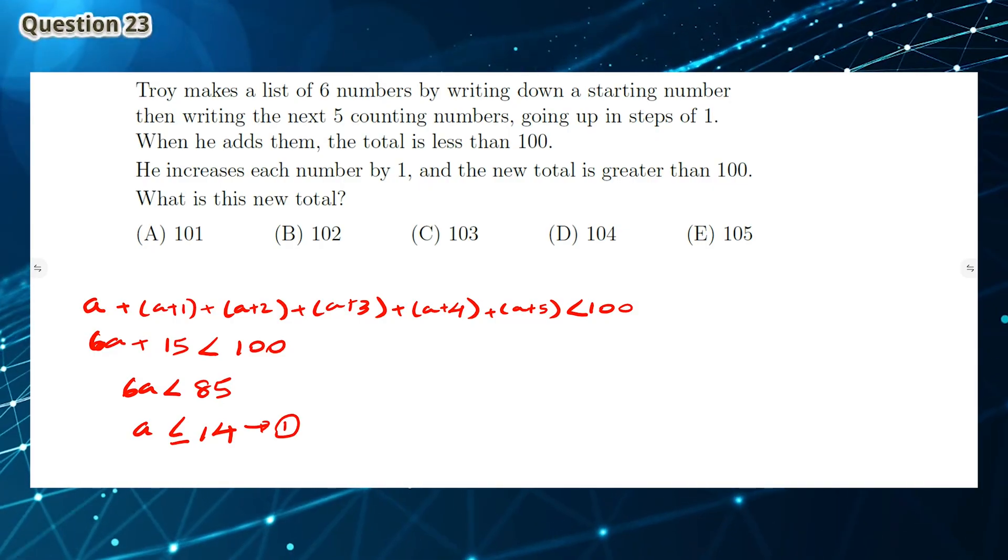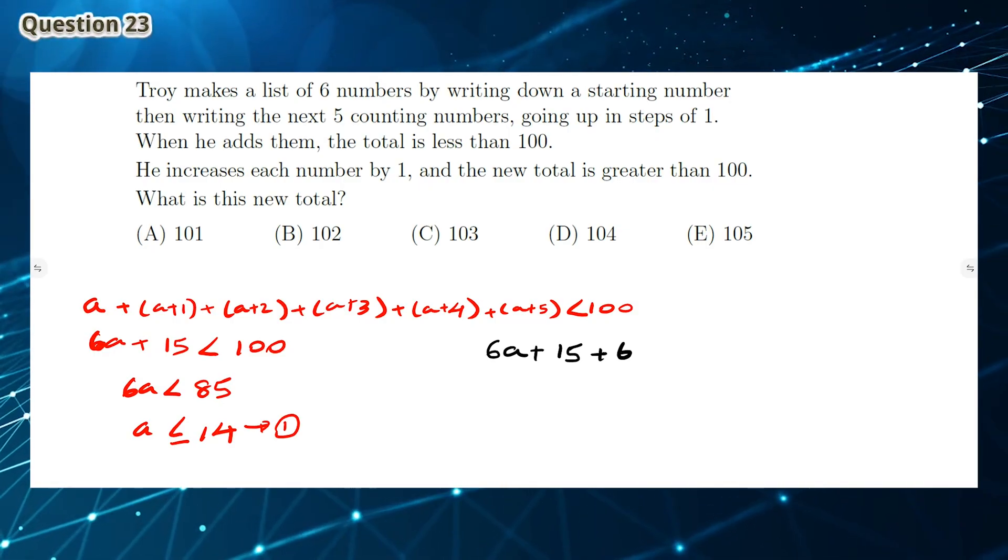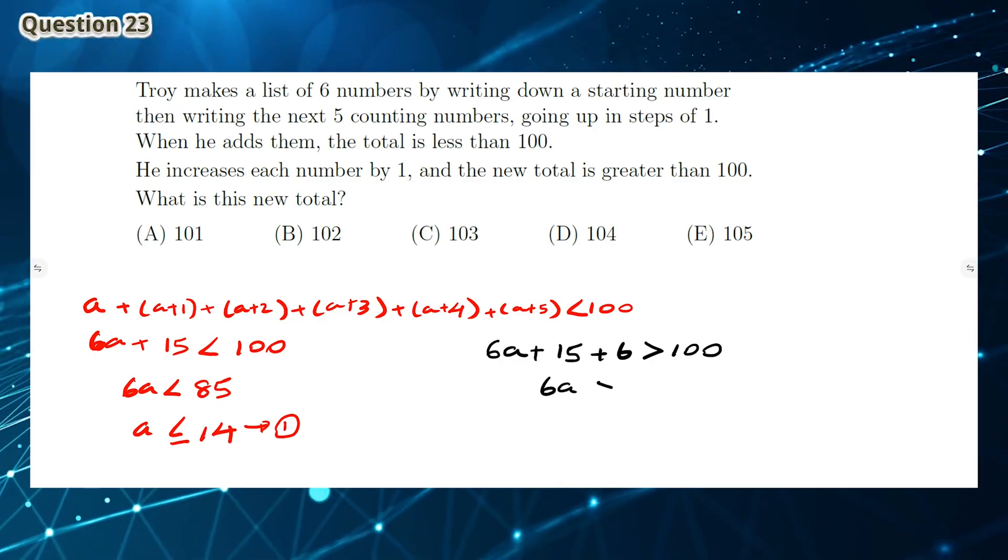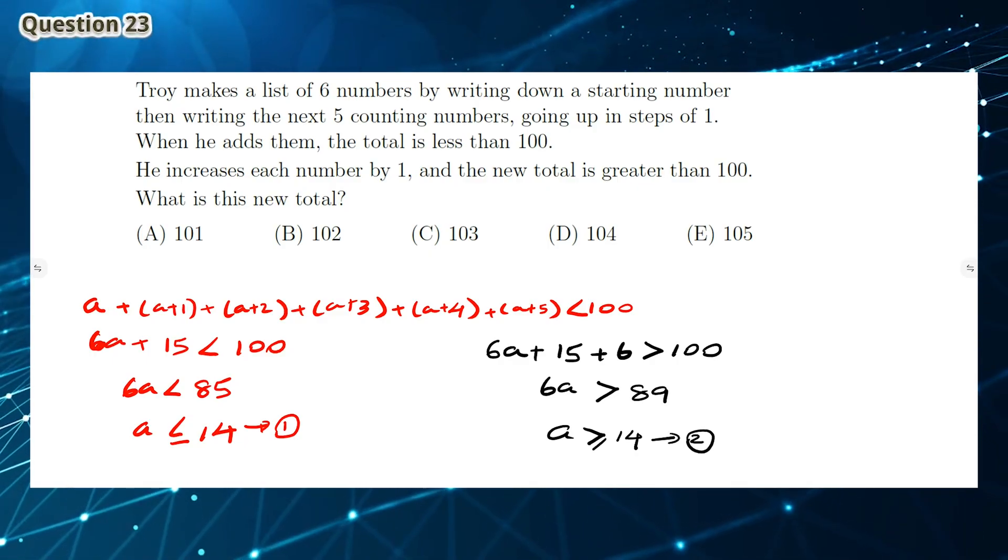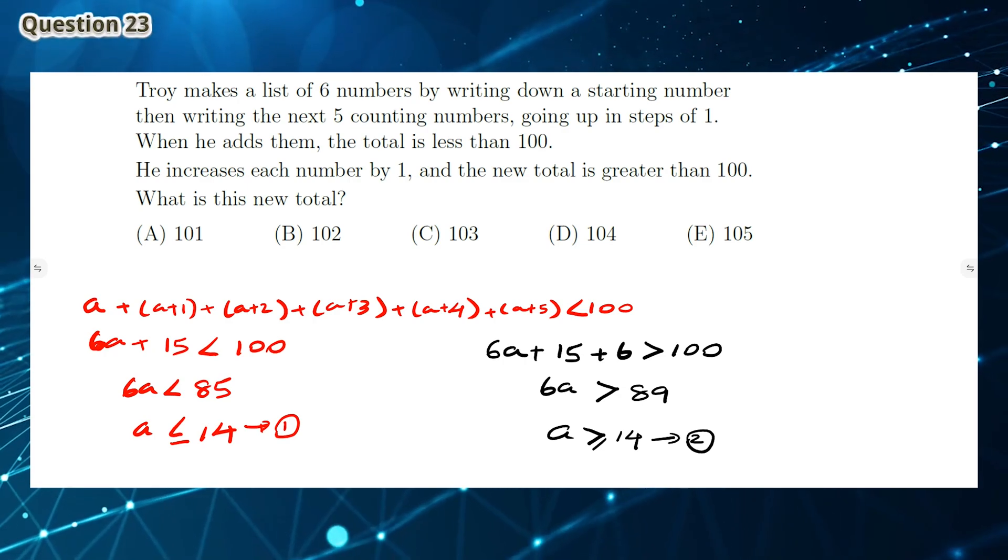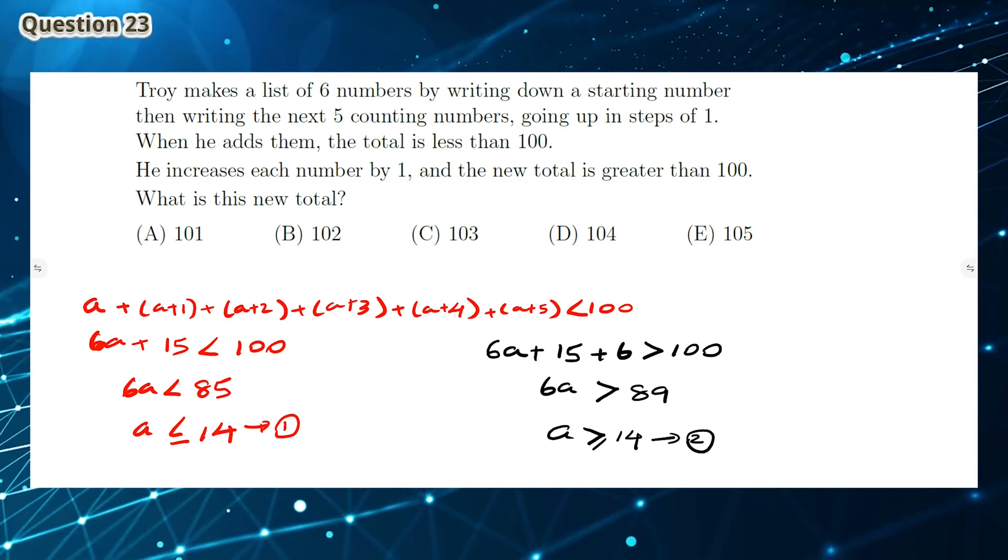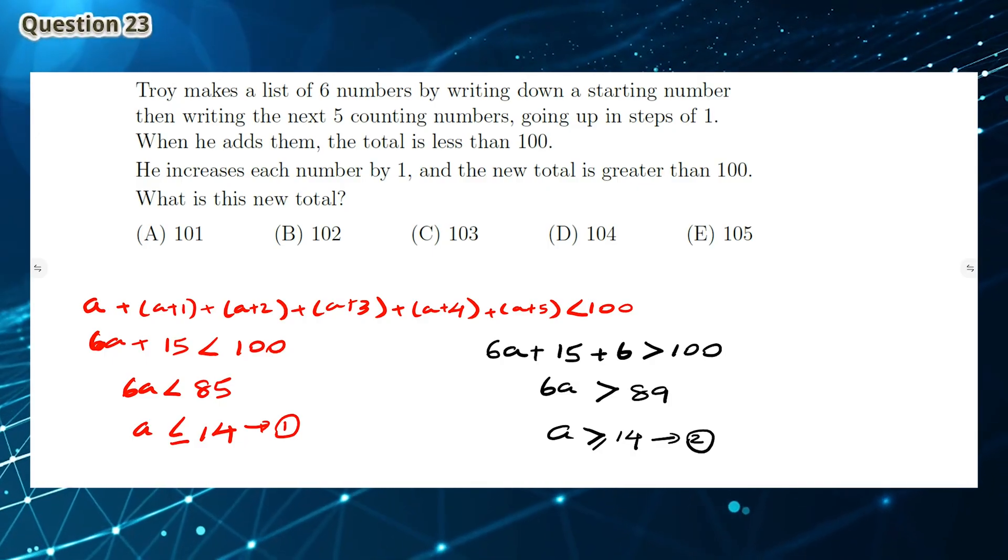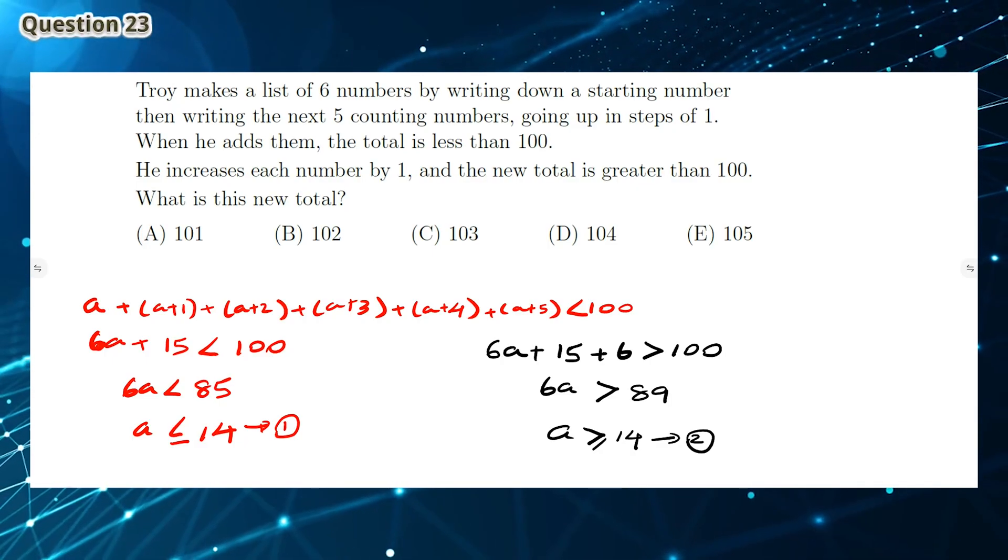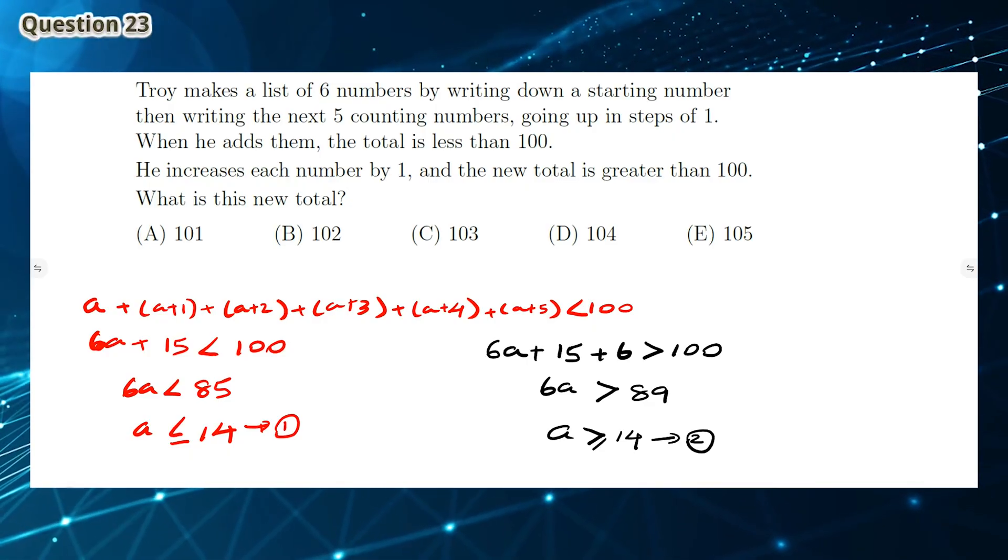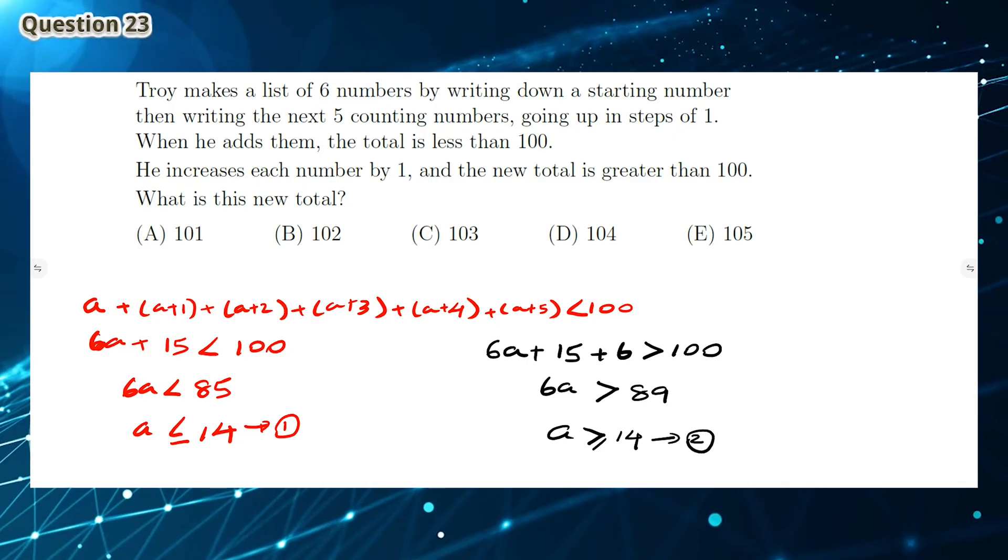This basically means that if you get 6A plus 15 and add 6 to it, it will be greater than 100. This means A has to be greater than or equal to 14. If you look at equations 1 and 2, A has to fulfill the condition that A is less than or equal to 14 and A is greater than or equal to 14. The only whole number that satisfies both of these conditions is 14. So A has to be 14.